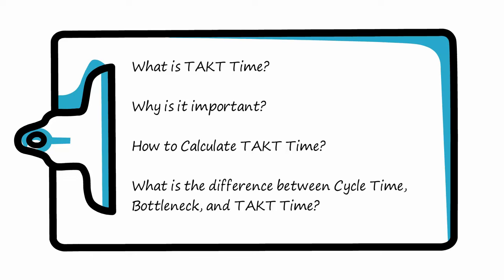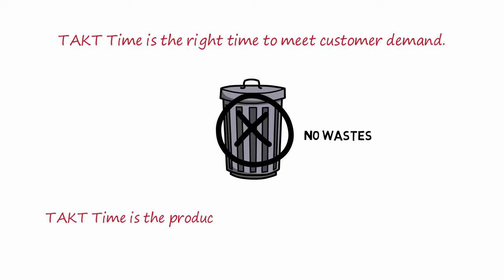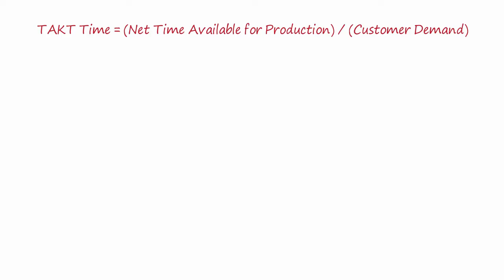Takt time is the right time to meet customer demand, avoiding stock wastes or missing deliveries. In other words, takt time is the speed with which the product needs to be created to satisfy customer demand. Takt time formula: takt time equals net time available for production divided by customer demand at that time.